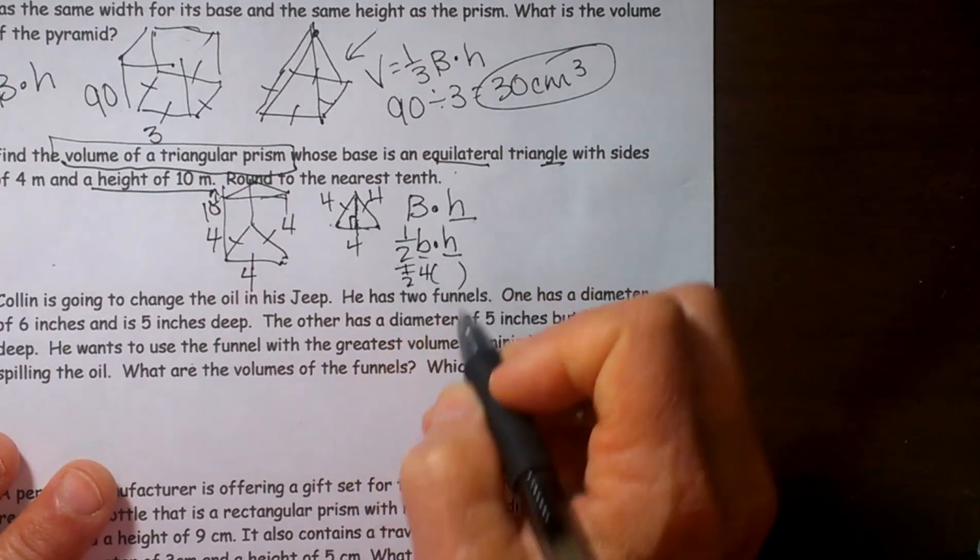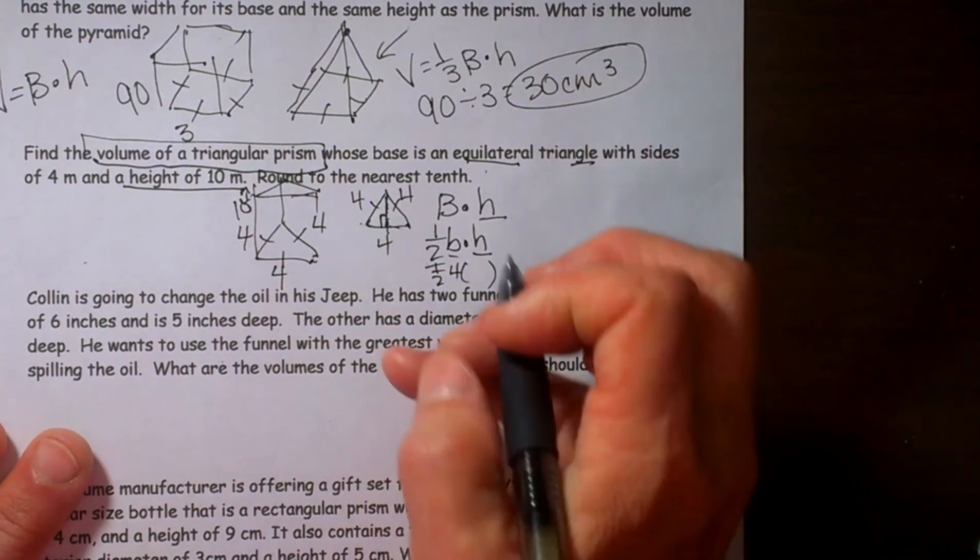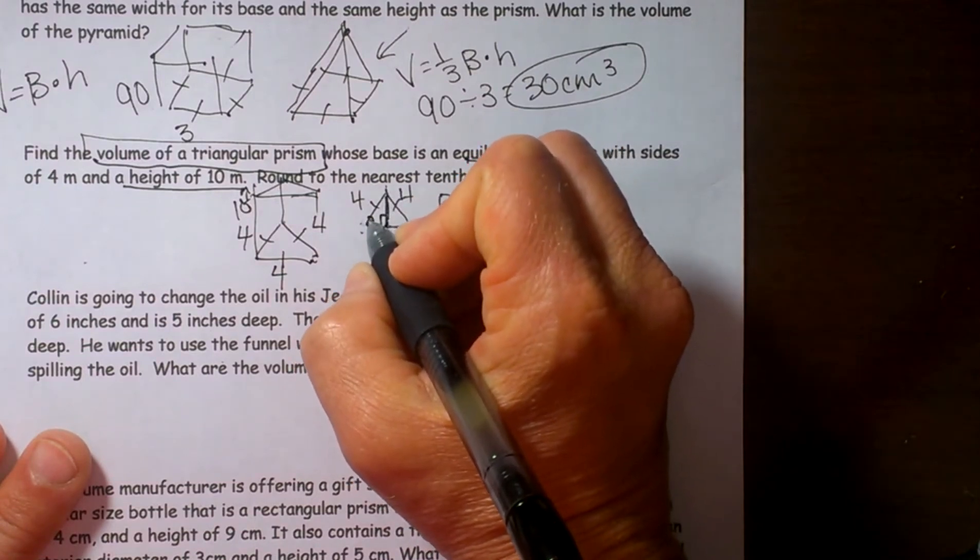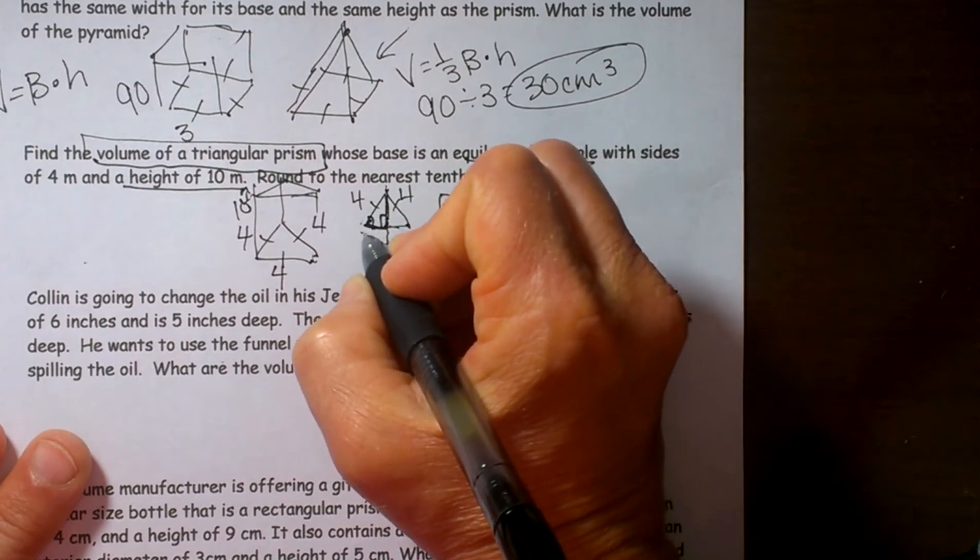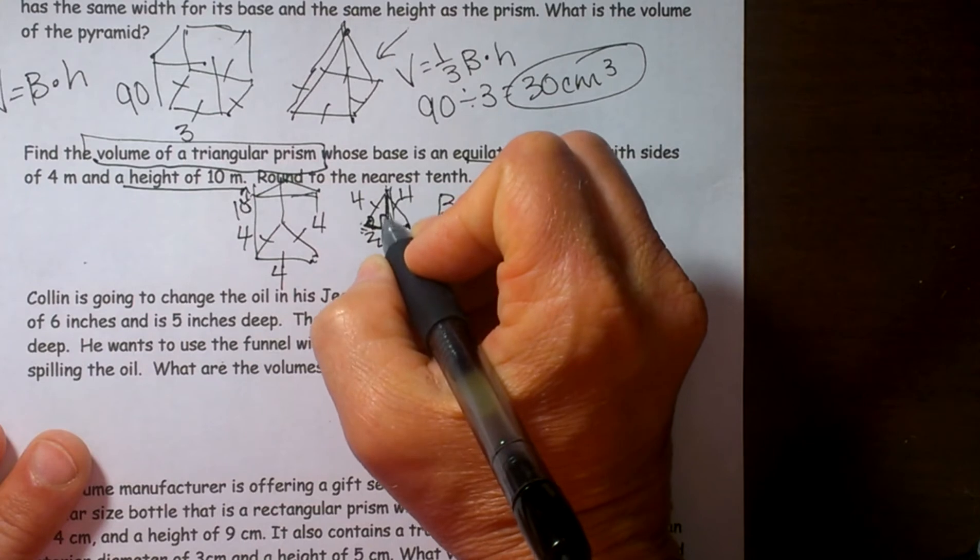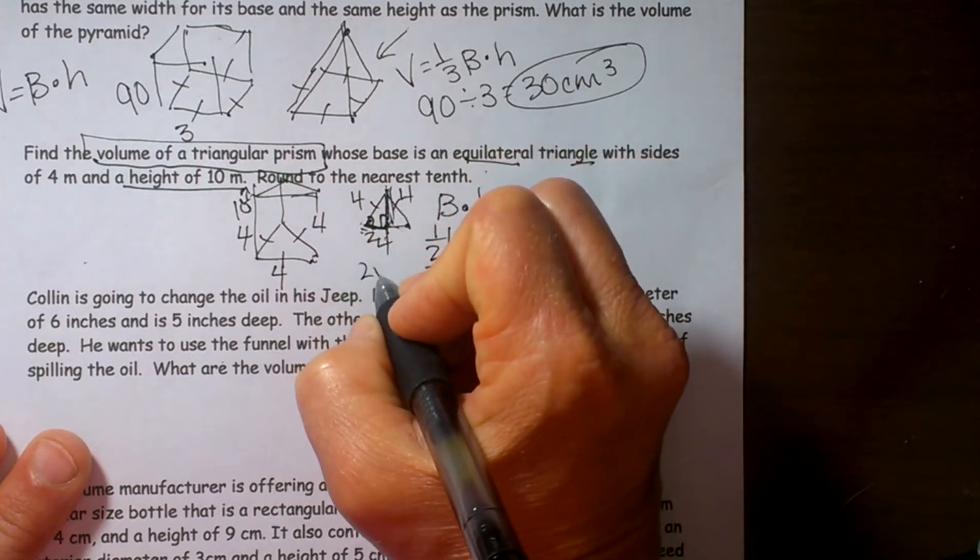And the height is, well we have a couple ways we can do this one. If you know your 30-60-90 rules, you know that inside an equilateral triangle, if you drop an altitude, you have created a 30-60-90. Where this side right here is two, it is half of the four. And then you can multiply by the square root of three to get the height. So that would be two square root of three.